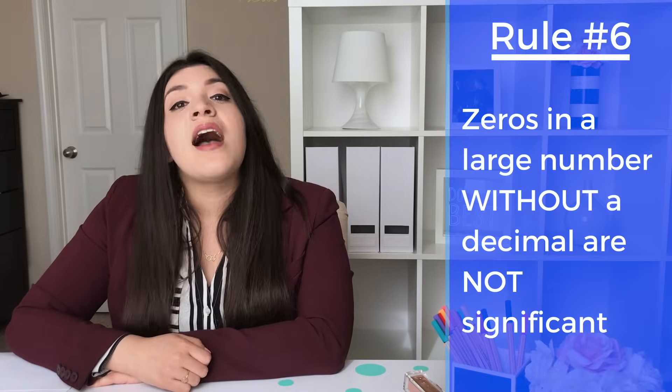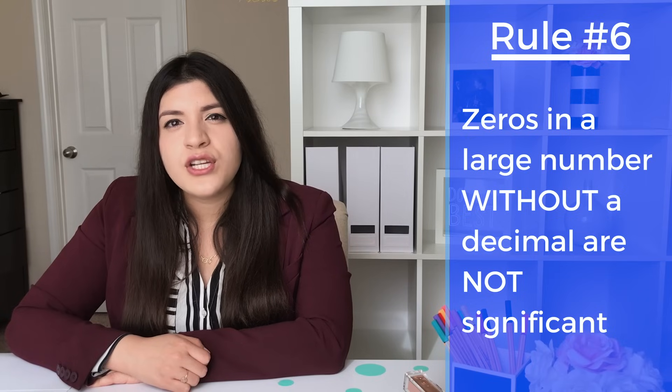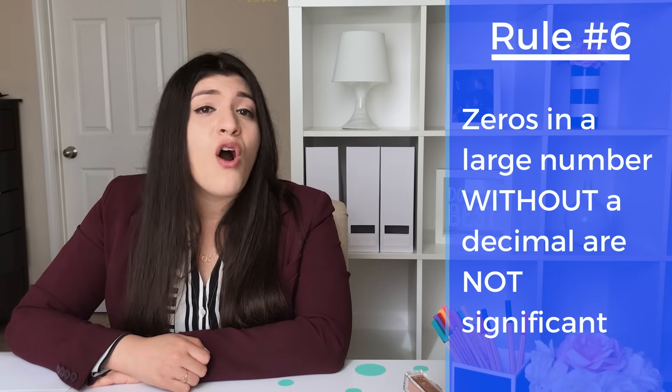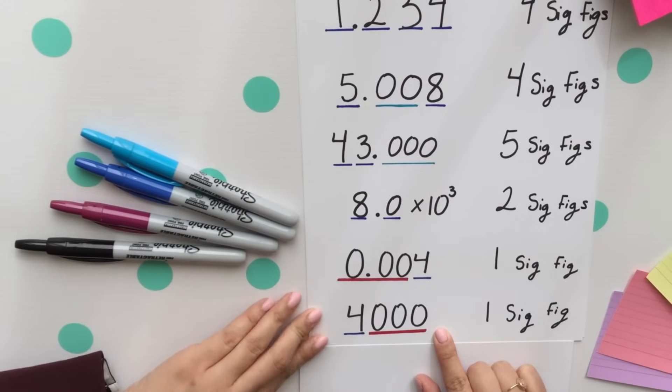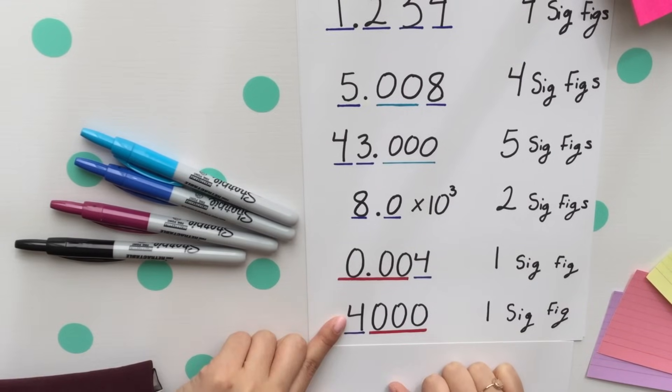Rule number six, any zeros in a large number without a decimal are not significant. These three zeros are within a large number without a decimal, so they do not count as significant. Only the four does. There's only one sig fig.